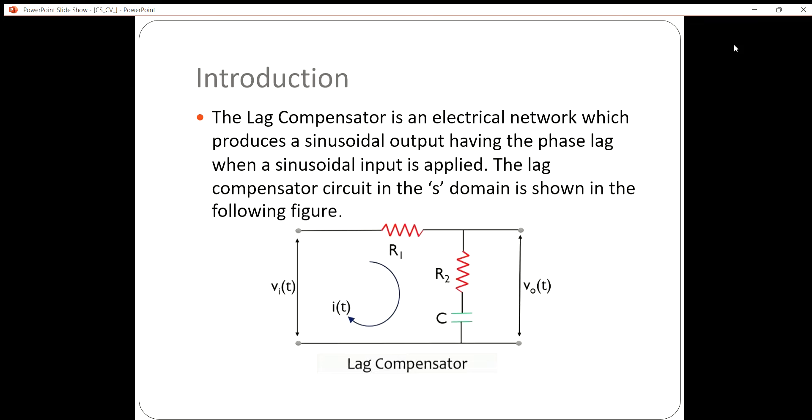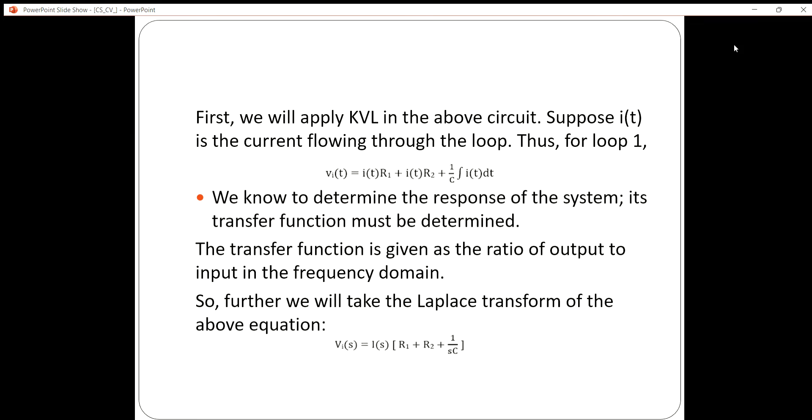First, we apply KVL in the above circuit, considering I(t) is the current flowing through the loop in time domain. We write the equation as V_in(t) = I(t) × R1 by using Ohm's law, plus I(t) × R2, plus (1/C) ∫I(t)dt.